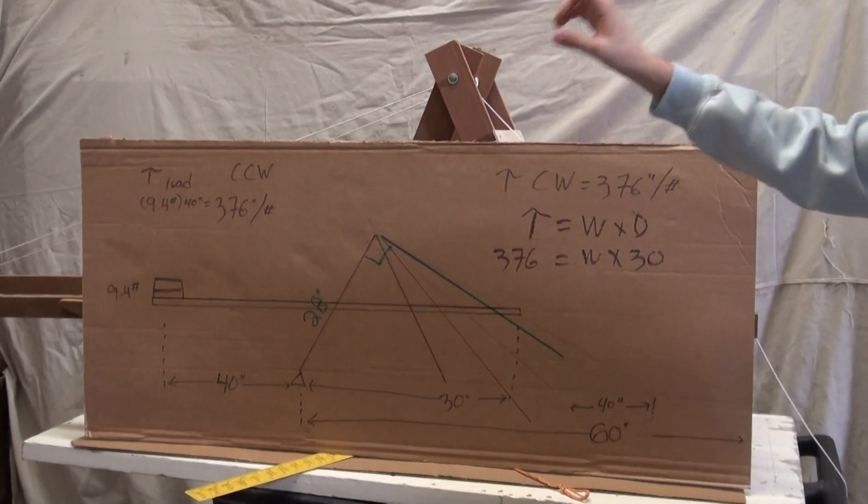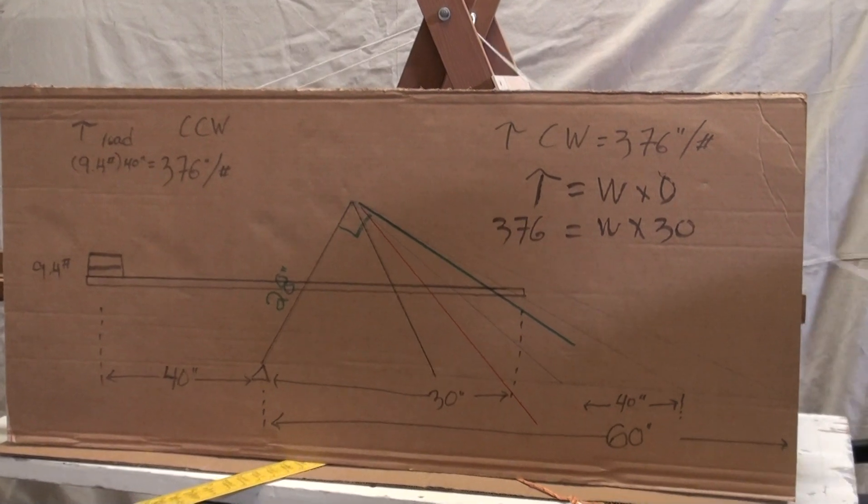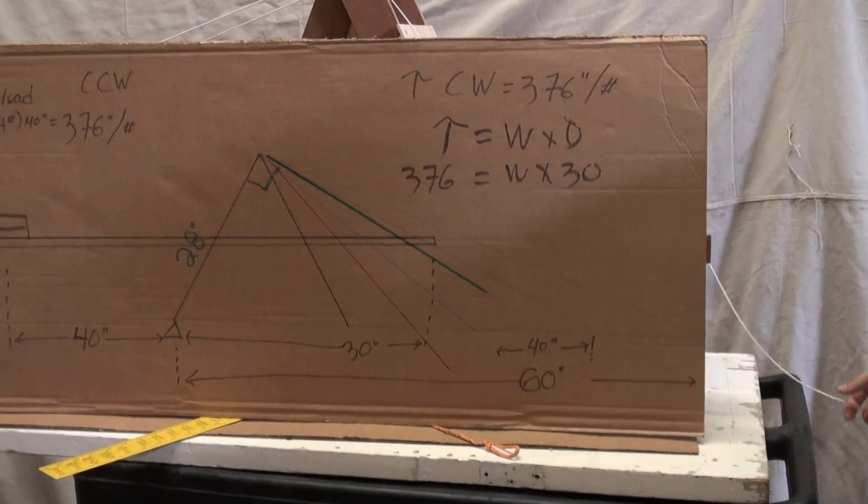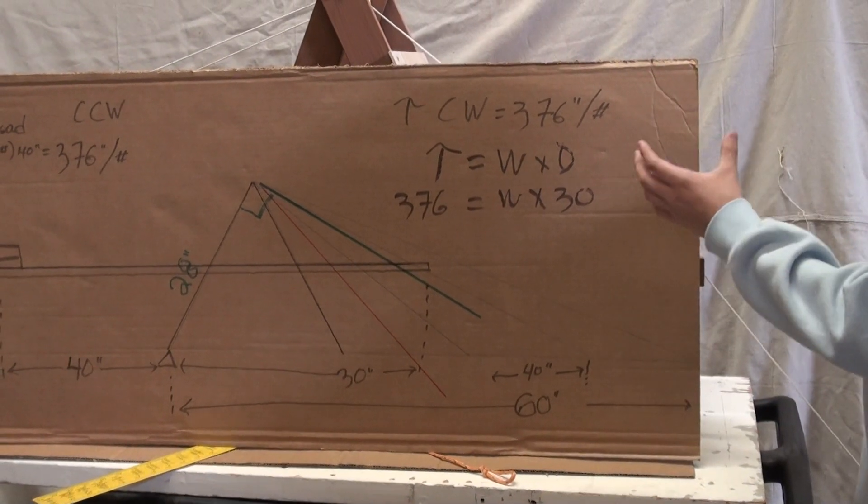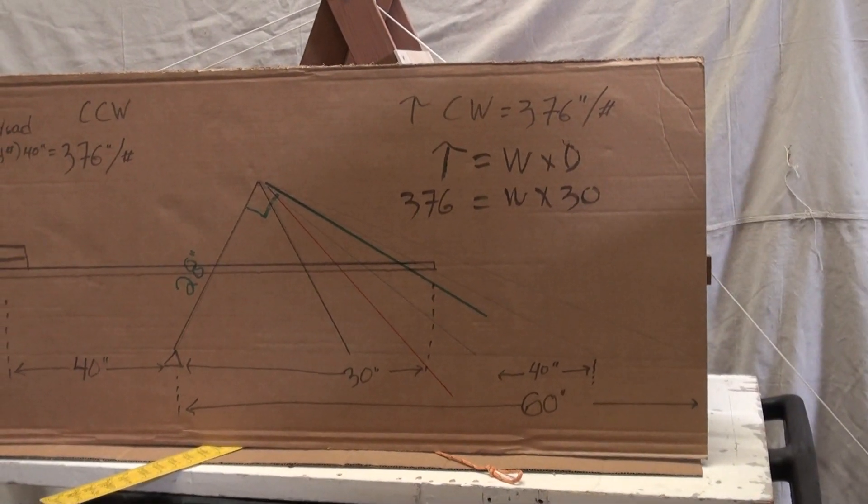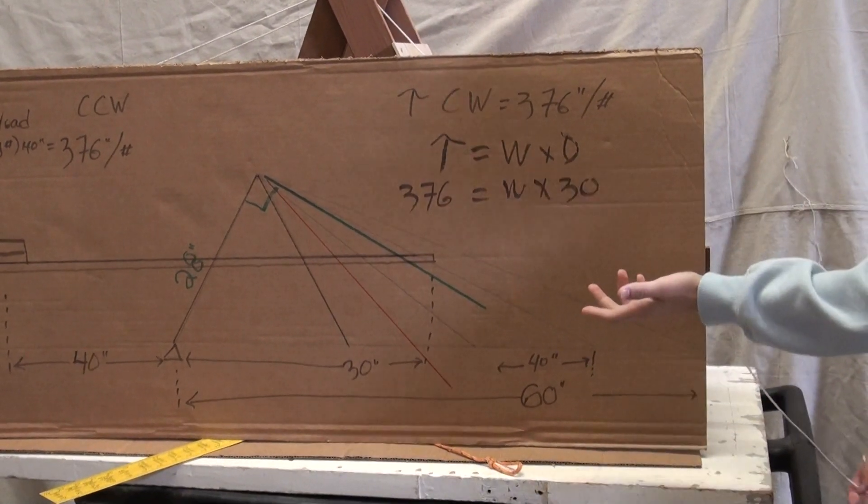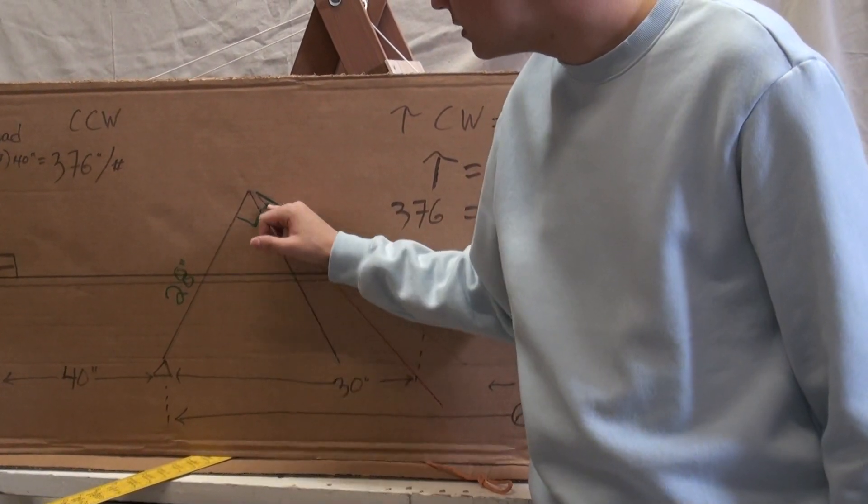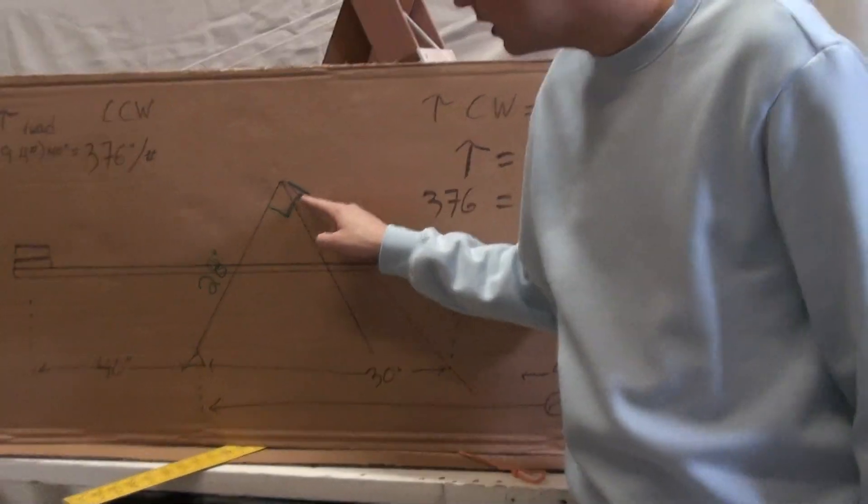Counterweight, sorry, load side. We want to match that with our line and muscle power. So we take our 376 inch pounds of torque. And now, instead of using 30 inches, we use our 28 inches. Because that is the shortest distance from our line of force to the pivot point.